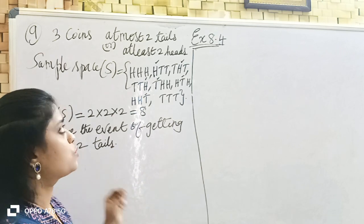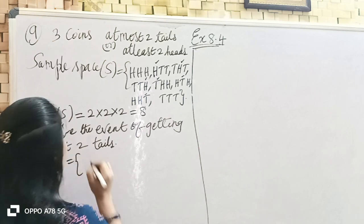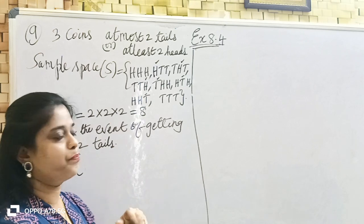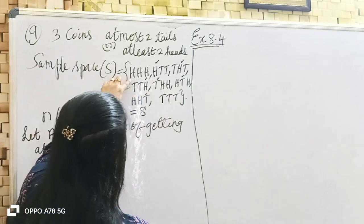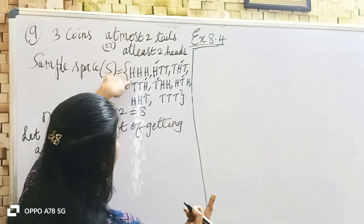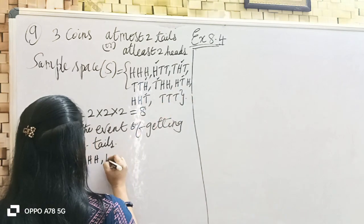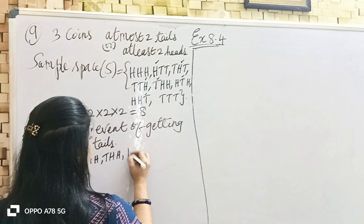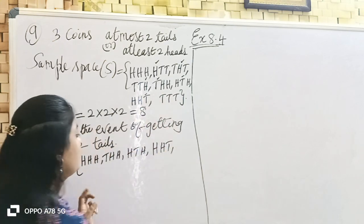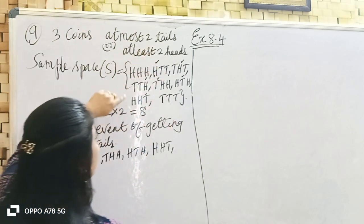So 'at most' means maximum. At most maximum two tails. At most one tail means zero tail is also included. So zero tails, one tail, two tails — at most one tail includes these. TH, HTH — zero tail, one tail, two tails. At most two tails means two tails are included.